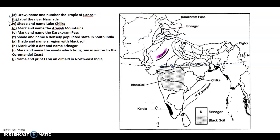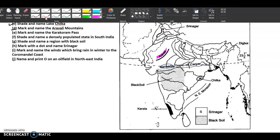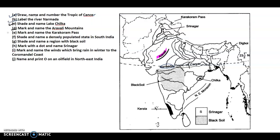Mark and name the Karakoram Pass — this is Karakoram Pass. Shade and name a densely populated state in south India — this is Kerala. Shade and name a region with black soil — black soil is here, this part. Mark with a dot and name Srinagar — this is Srinagar, you can see the arrow and this dot.